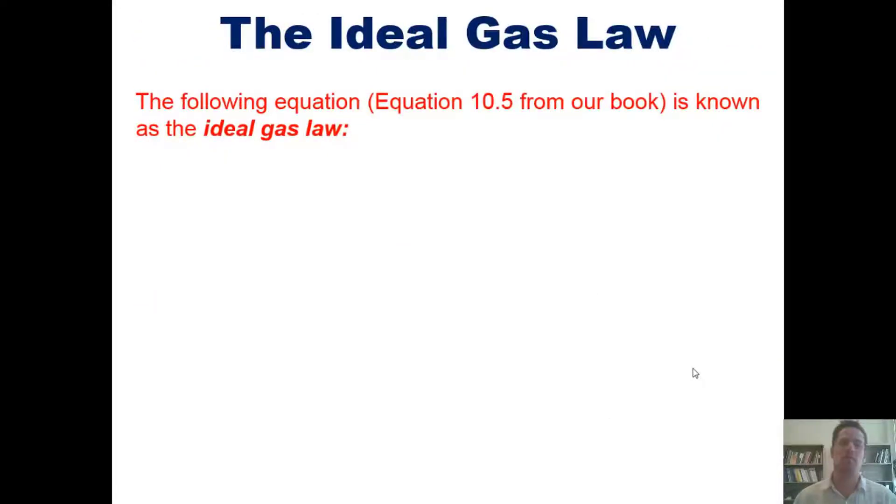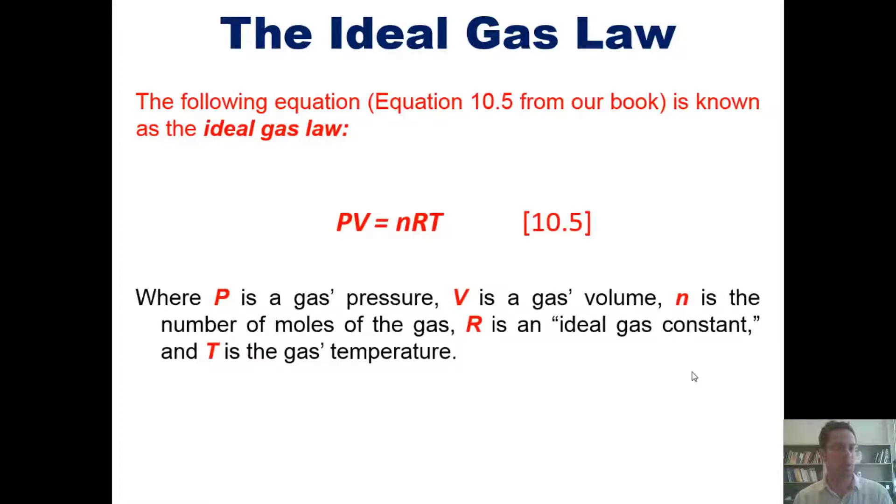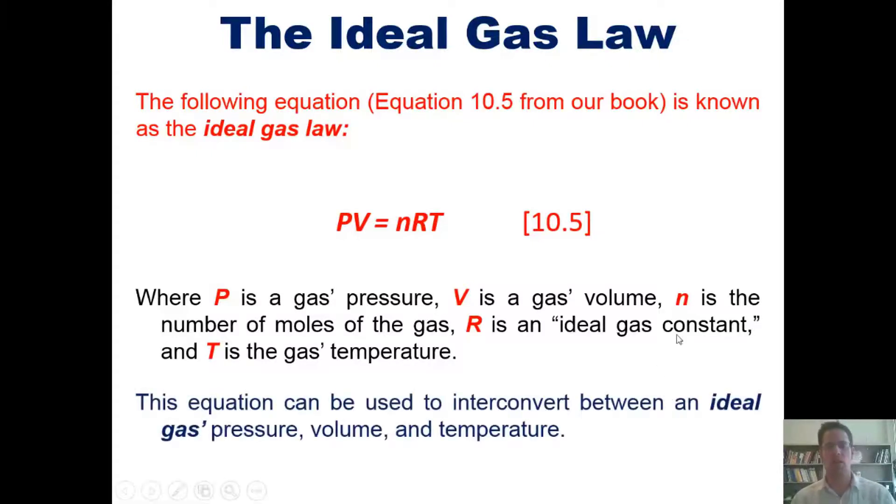The following equation right here is known as the ideal gas law, where P is a gas's pressure, V is its volume, n is the number of moles of the gas, and R is something called the ideal gas constant, and T is the gas's temperature. This equation could be used to interconvert between any ideal gas's pressure, volume, and temperature.